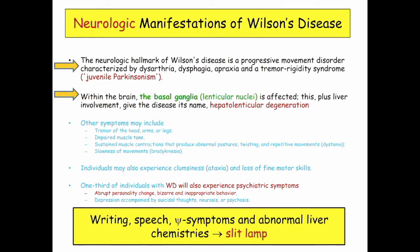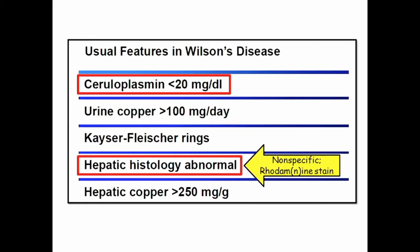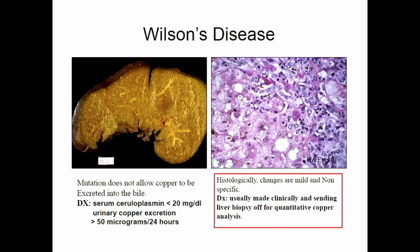Can't write all of a sudden, can't talk all of a sudden, acting bizarre, abnormal liver chemistries? The answer is slit lamp exam — that's how you make the diagnosis. You can get ceruloplasmin too. The liver pathology is nonspecific — nothing to memorize there. The copper stain used is rhodamine stain, which you may see in question banks. There's also a PAS-positive stain variant.